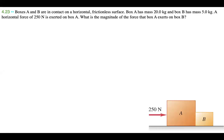Hi, today I have problem 4.23 from Young and Freedman's University Physics textbook. Boxes A and B are in contact on a horizontal frictionless surface. Box A has a mass of 20.0 kilograms and box B has a mass of 5.0 kilograms. A horizontal force of 215 newtons is exerted on box A. What is the magnitude of the force that box A exerts on box B?